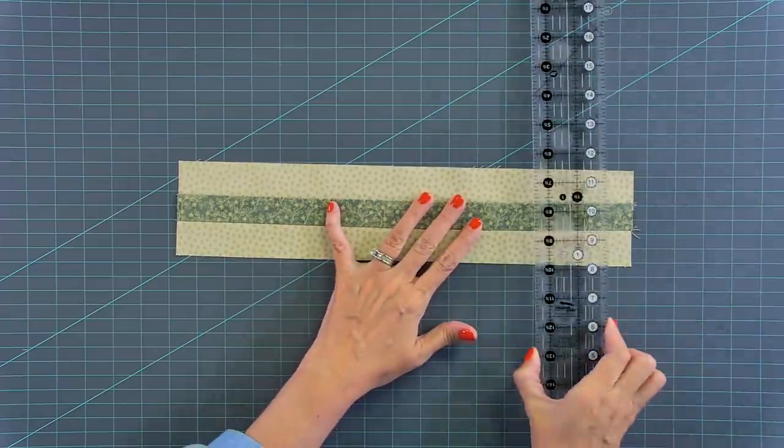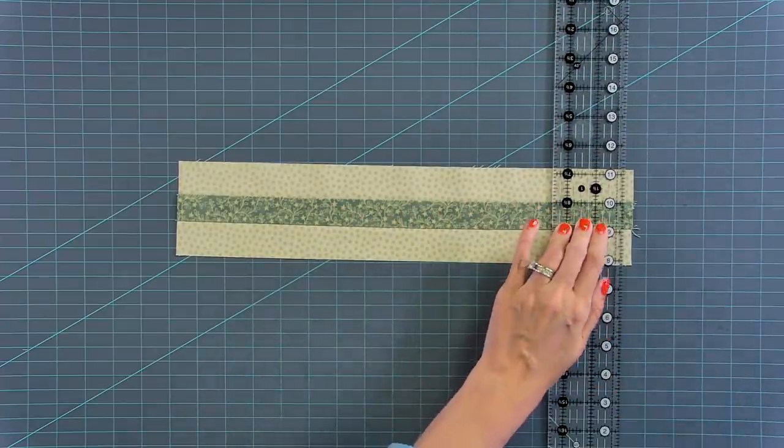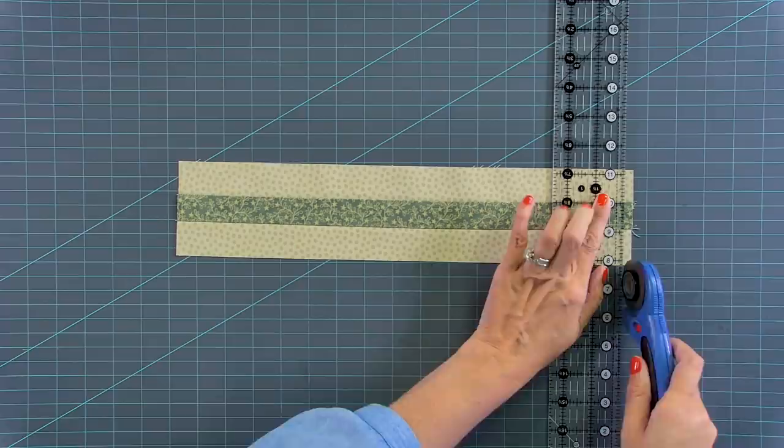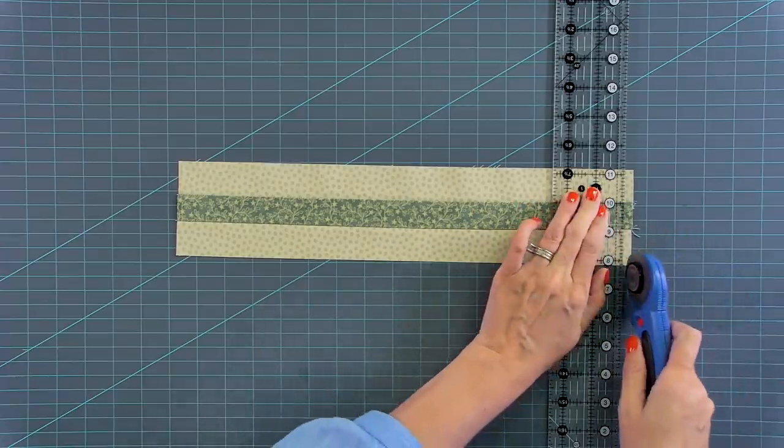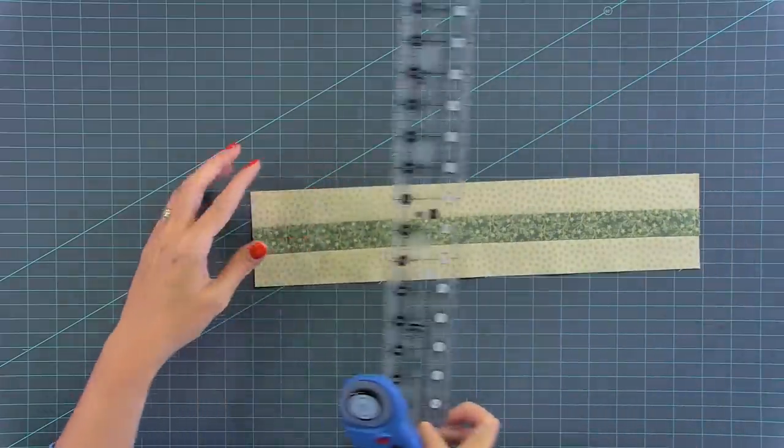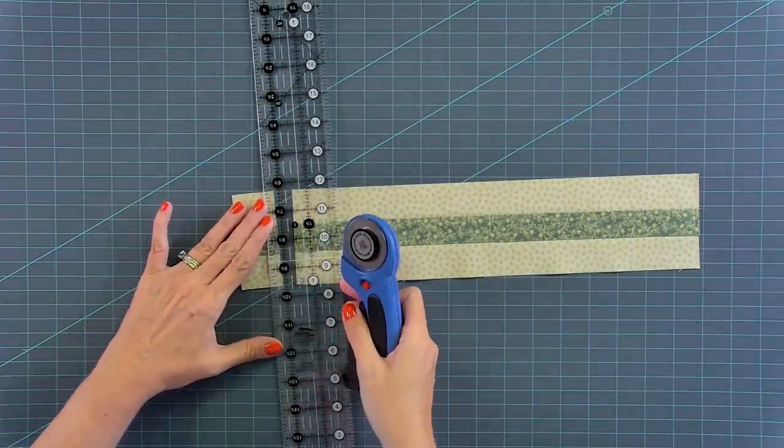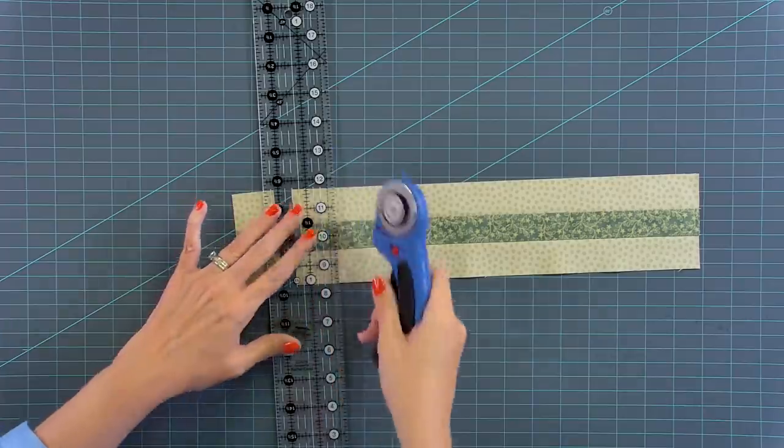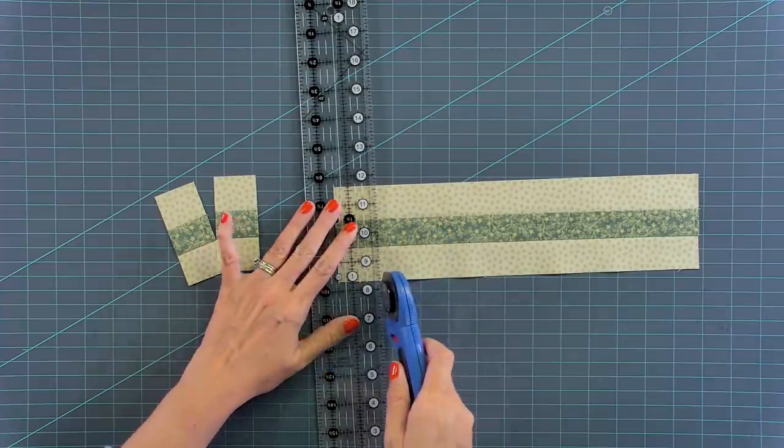Now from this background strip set, we're going to sub cut this into eight one and a half inch rectangles. So the first thing I like to do is line my ruler on the seam and cut a nice clean cut. And then we're going to cut eight rectangles. And as you get in further to the strip, your rectangles might kind of start getting wobbly or not as straight.